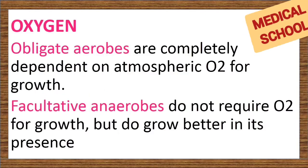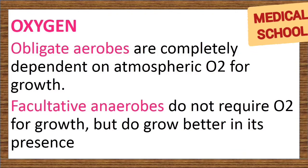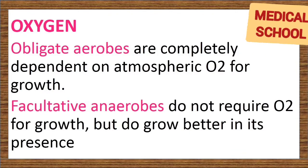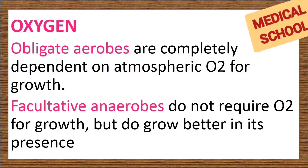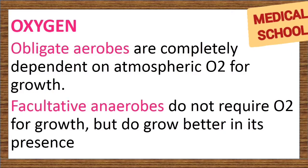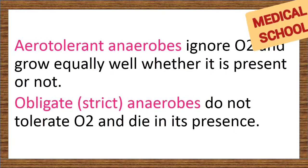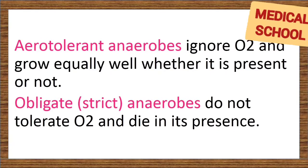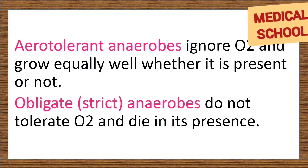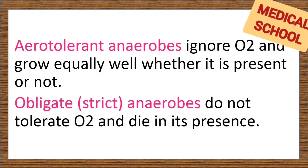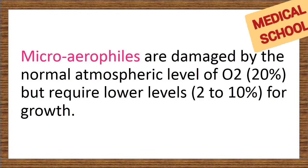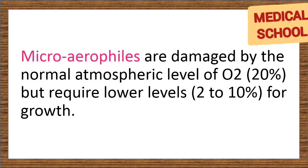Oxygen. Obligate aerobes are completely dependent on atmospheric oxygen for growth. Facultative anaerobes do not require oxygen for growth but do grow better in its presence. Aerotolerant anaerobes ignore oxygen and grow equally well whether it is present or not. Obligate anaerobes do not tolerate oxygen and die in its presence. Microaerophiles are damaged by the normal atmospheric level of oxygen but require lower levels for growth.